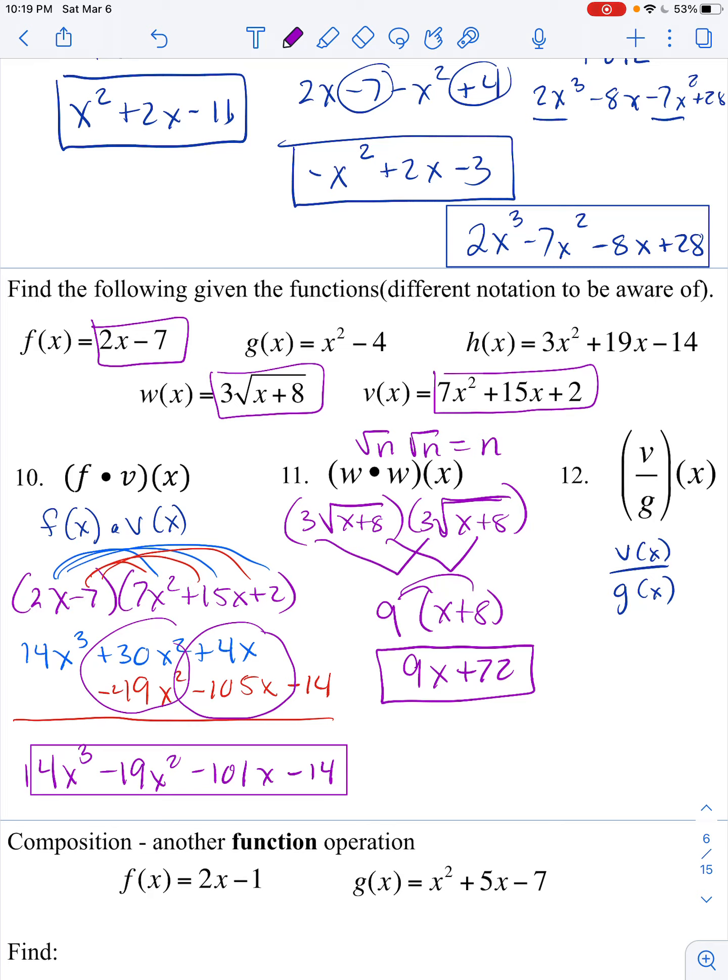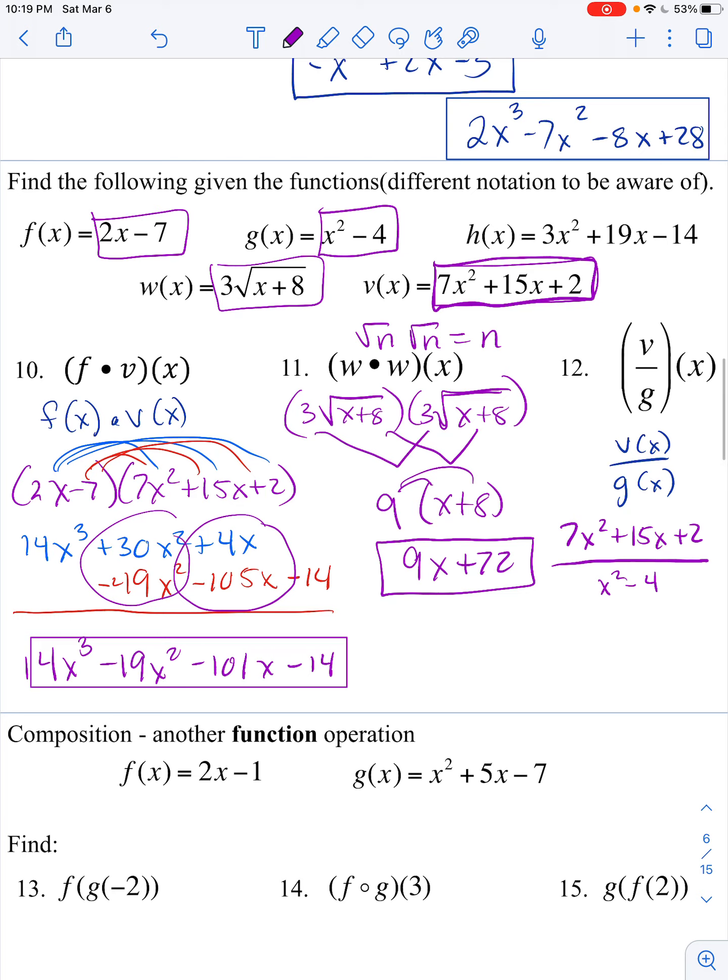So now I'm just going to distribute, and then I'm done. I have it in standard form, simplified. No common terms or anything left to take care of. And let's manage this grand finale. We are taking v, which is 7x squared plus 15x plus 2, putting it over g, which is x squared minus 4.